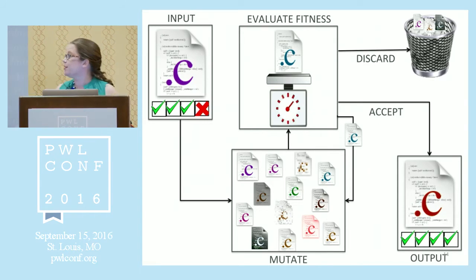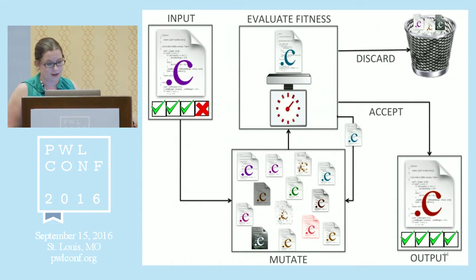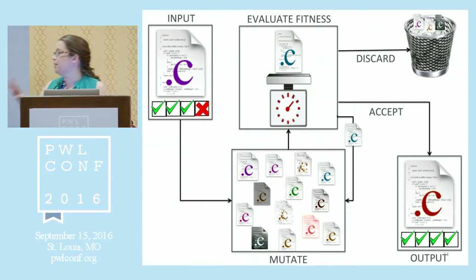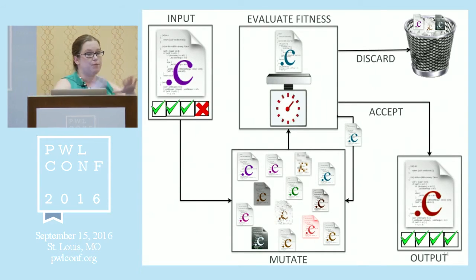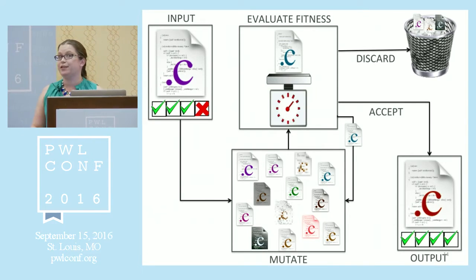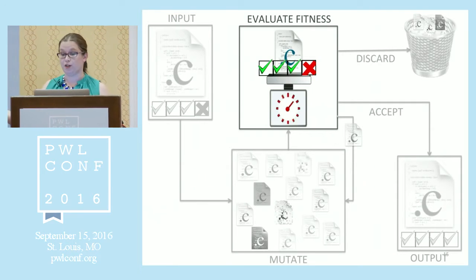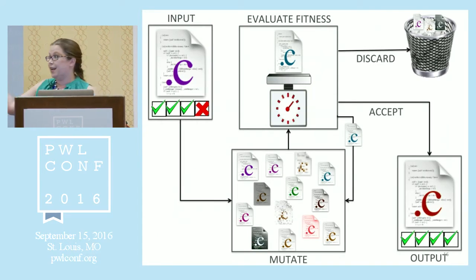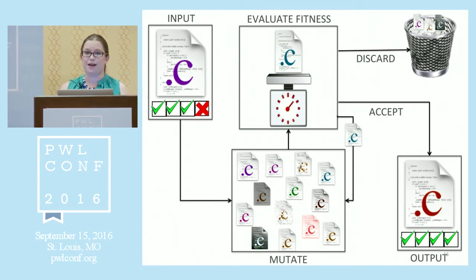Here's a diagram to show roughly how this works. We have program and test cases as input. We need the passing test cases because we want to make sure we don't break anything. Evolutionary computation is a population-based approach — it generates a number of candidate solutions and iteratively refines that population looking for a variant that actually solves the problem. Each candidate is evaluated for its fitness: how many tests does the patched program pass? The good ones are maintained for continued evolution and recombination; the really bad ones — like those that move variables out of scope and don't compile — are discarded.